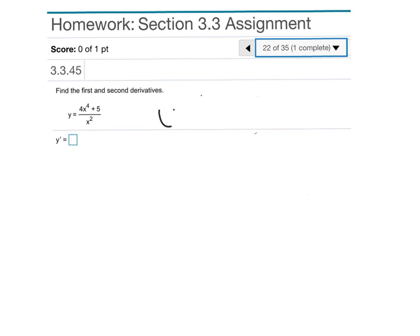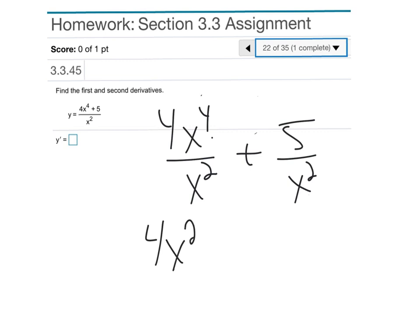Here's a situation where I can. I broke that rational expression up into two rational expressions because they have the same denominator. Now I'm going to simplify it: x^4/x^2 becomes 4x^2, and then this one I can do that 5x^-2 trick.